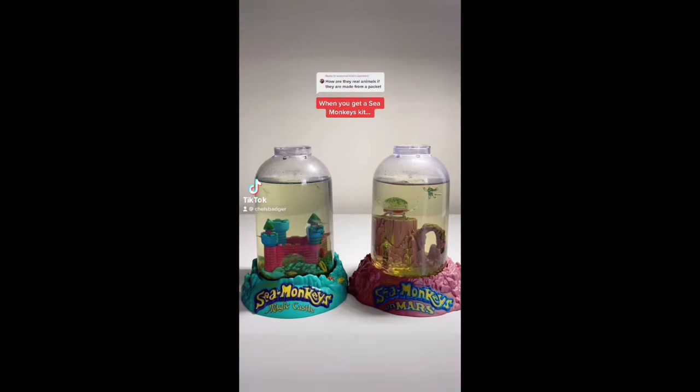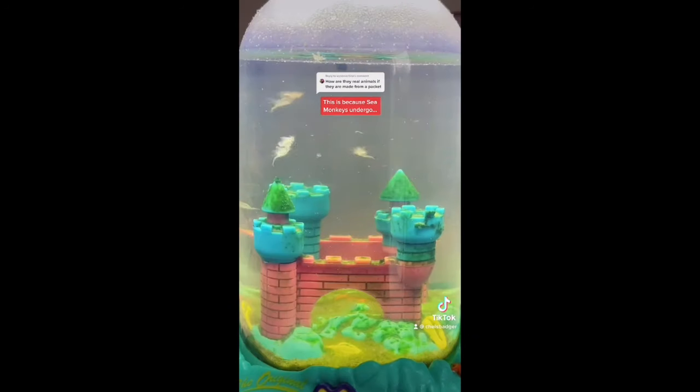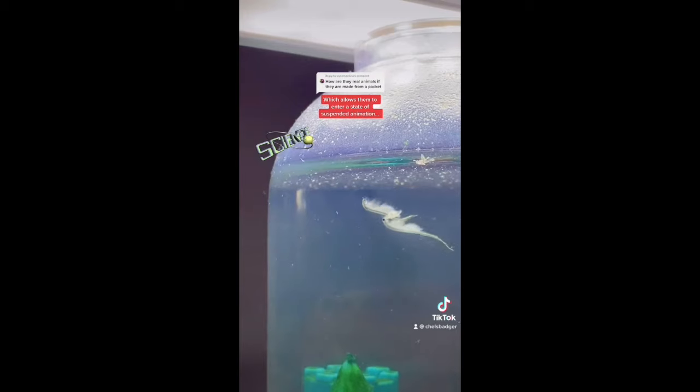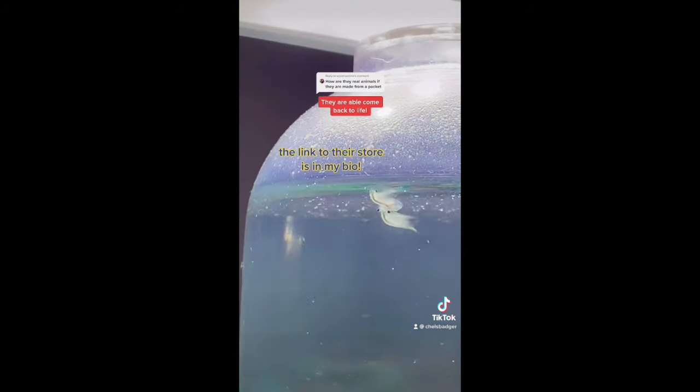When you get a sea monkeys kit they actually come in a dry powder form as eggs. This is because sea monkeys undergo something called cryptobiosis which allows them to enter a state of suspended animation when they are dried completely or deprived of oxygen, almost like hibernating. And then once the eggs are added to water they are able to come back to life.